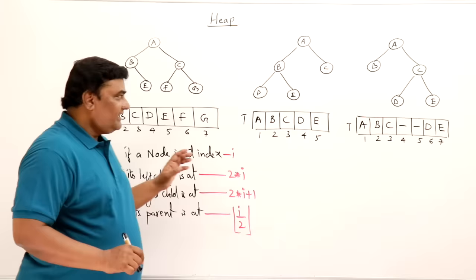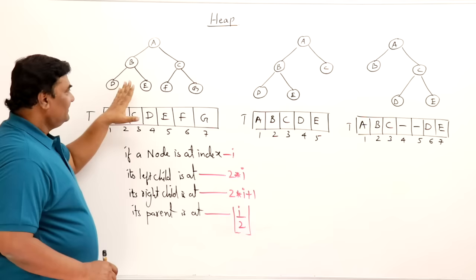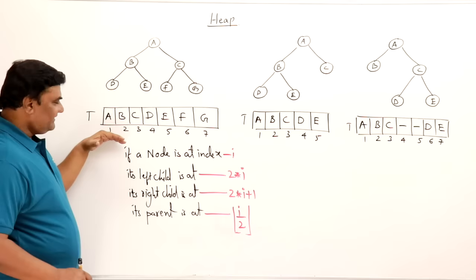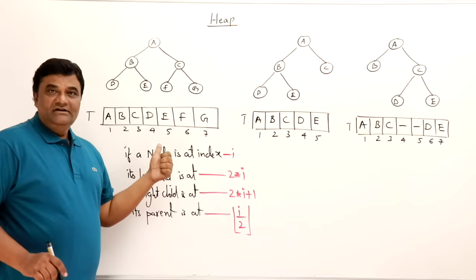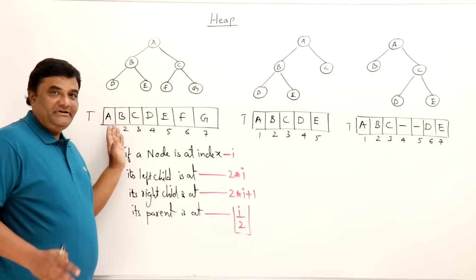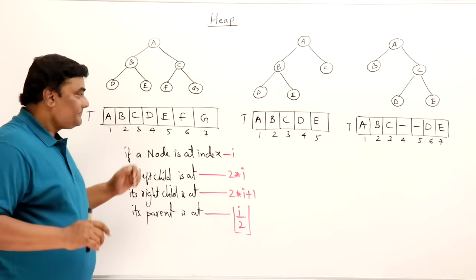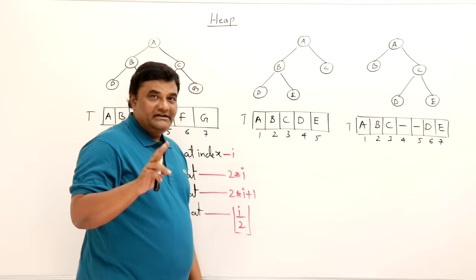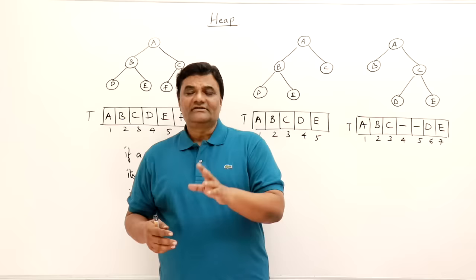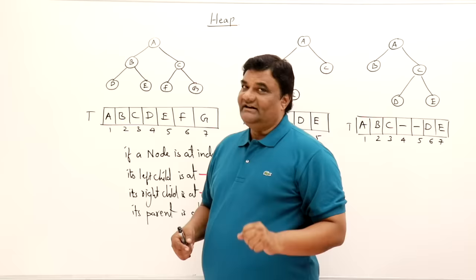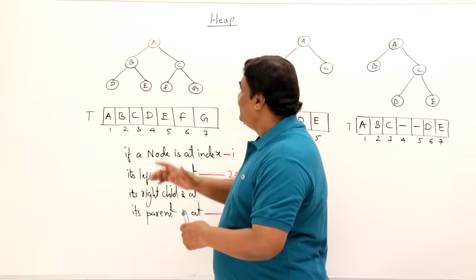First, I will discuss the representation of a binary tree using an array. Here I have an example binary tree using alphabets, so it's easy to read. In C/C++, arrays start from index 0, but here I have taken from index 1 onwards — this is just theoretical. To store a binary tree in an array, we need to preserve two things: the elements themselves, and the relationships between them — who is a parent, who is a left child, who is a right child.